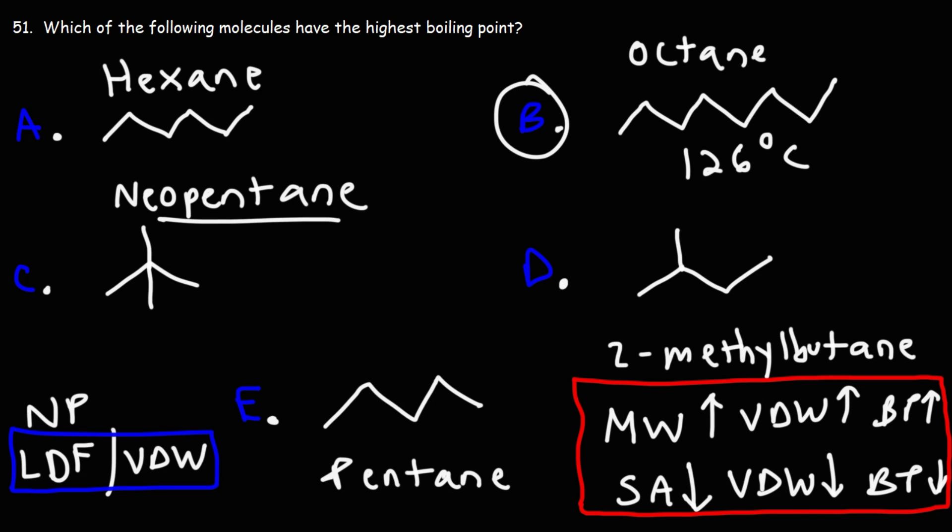The second highest is hexane. It's a straight chain alkane. And the boiling point for that is 69 degrees Celsius. For pentane, it's 36 degrees Celsius.